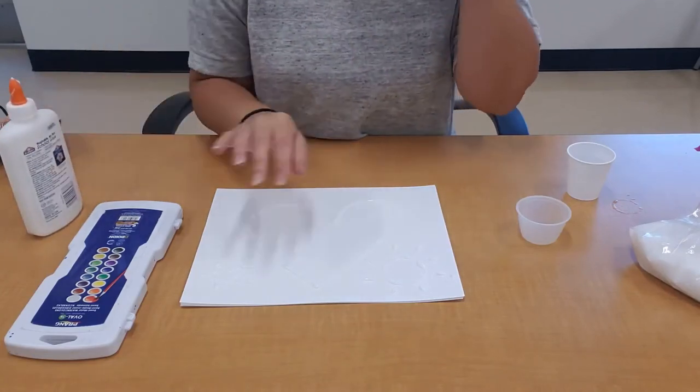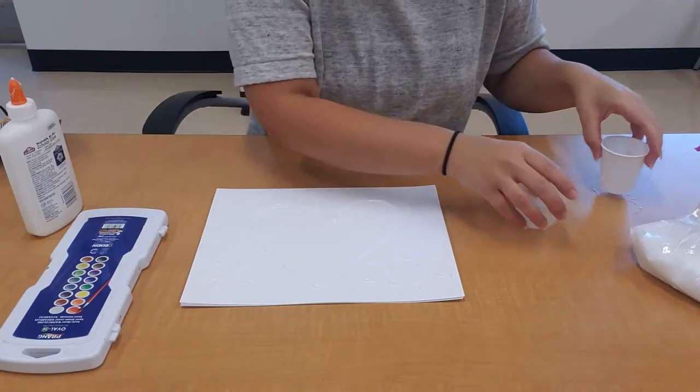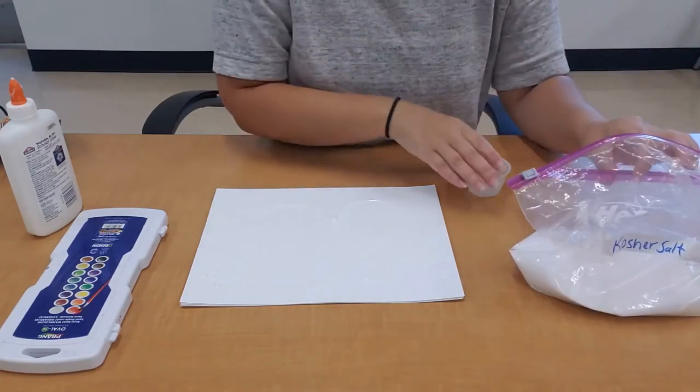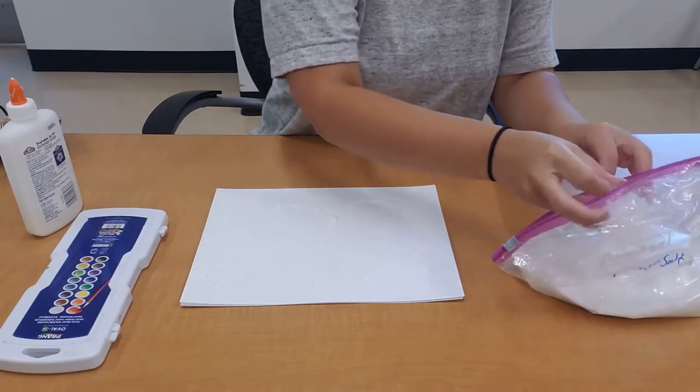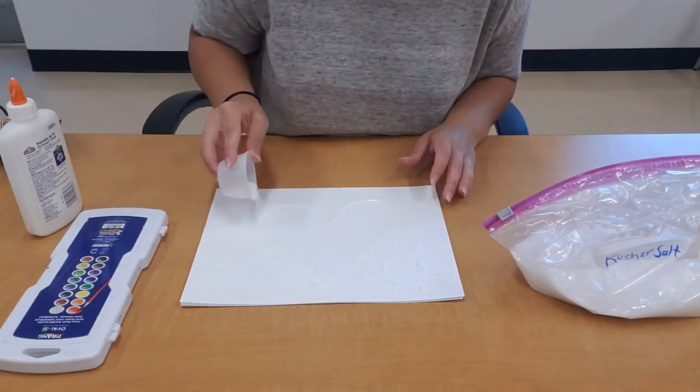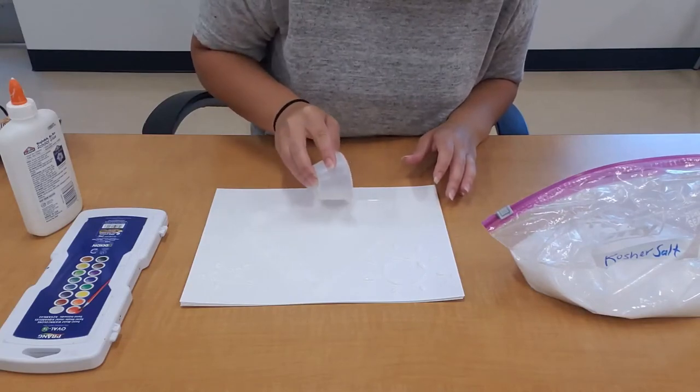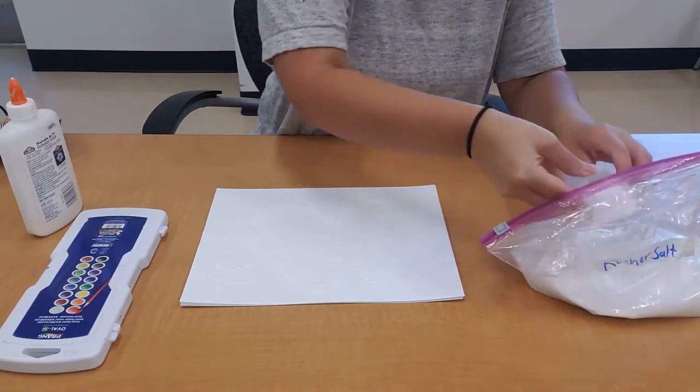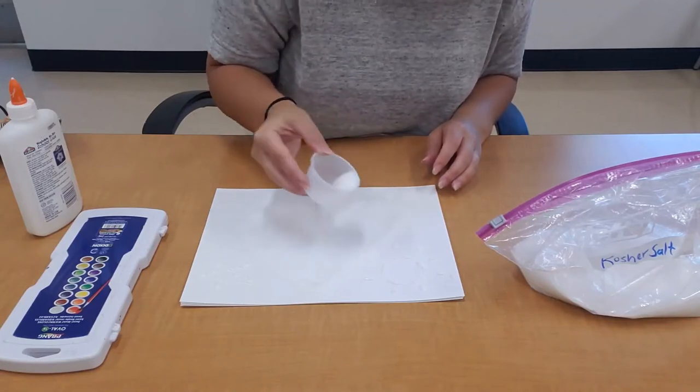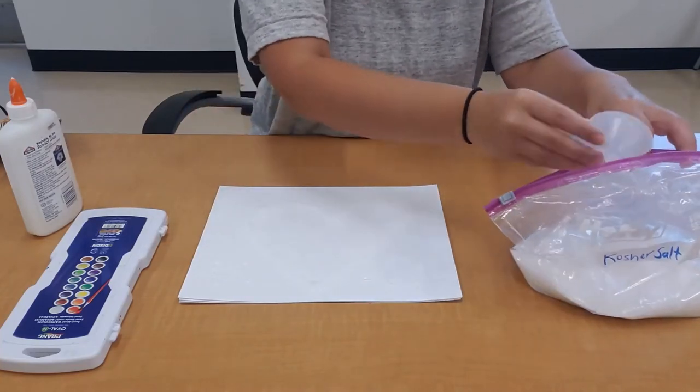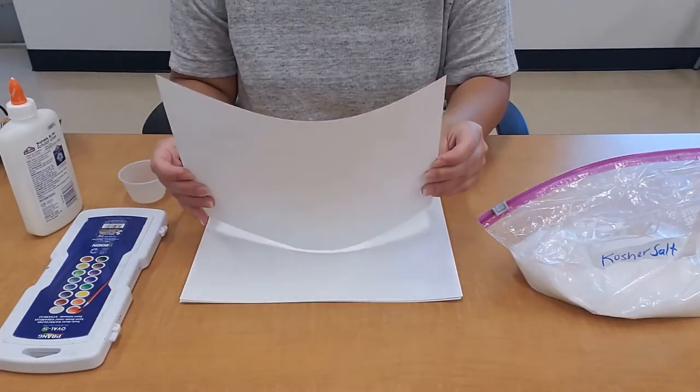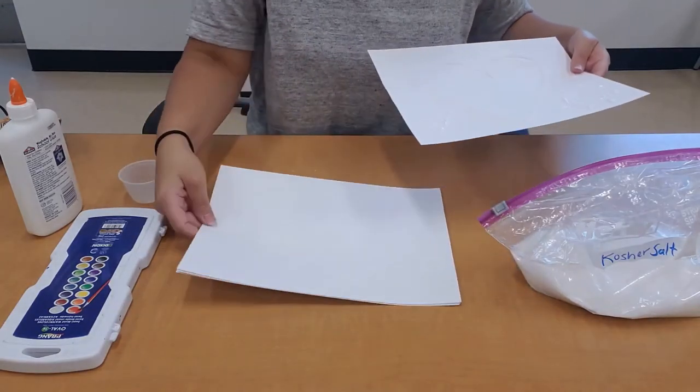Then wherever you put the glue on your paper is where you want to sprinkle the salt. So I'm going to take my salt and you want to coat your glue with salt. Regular table salt will work just fine. There will be extra salt that you'll shake off, and that extra salt you can use to cover up the rest of your picture.